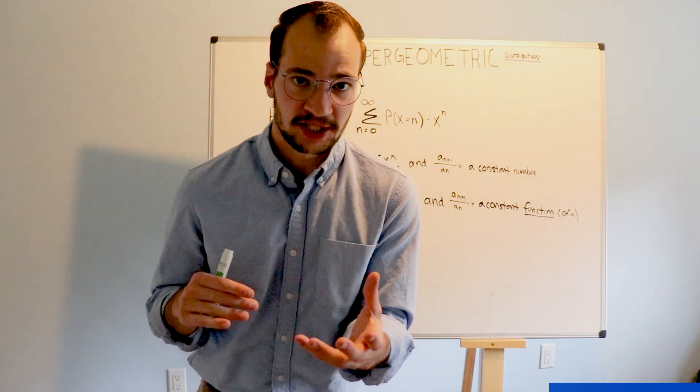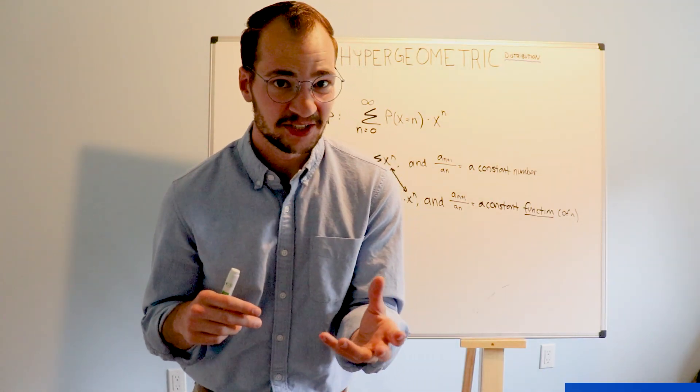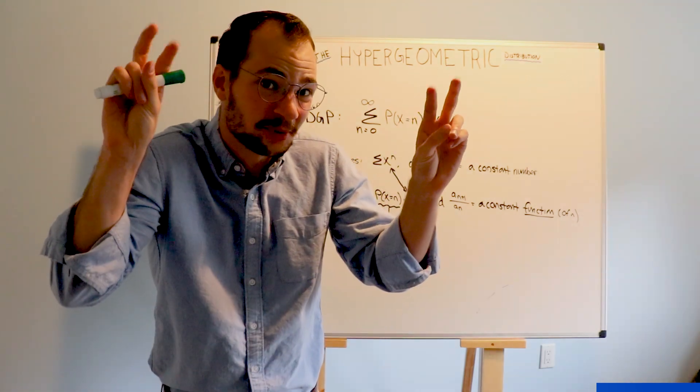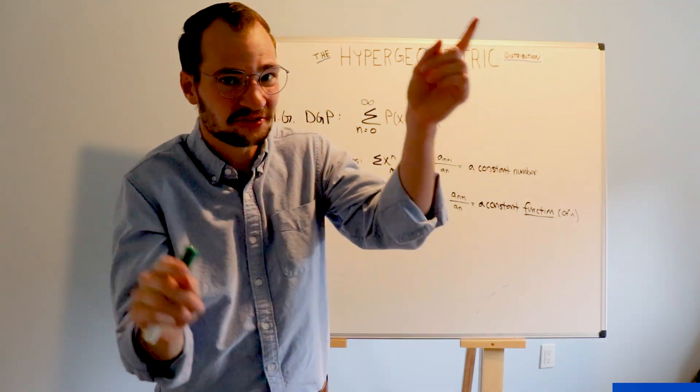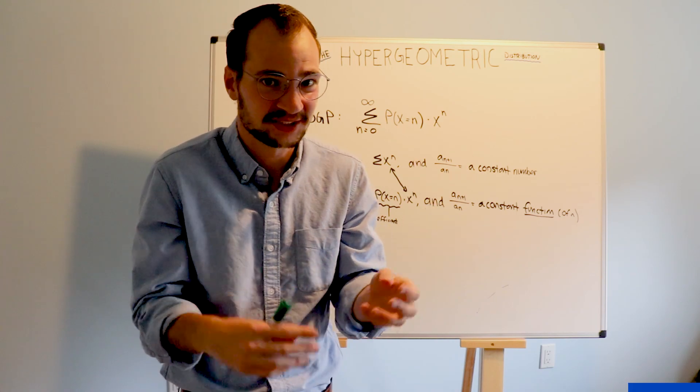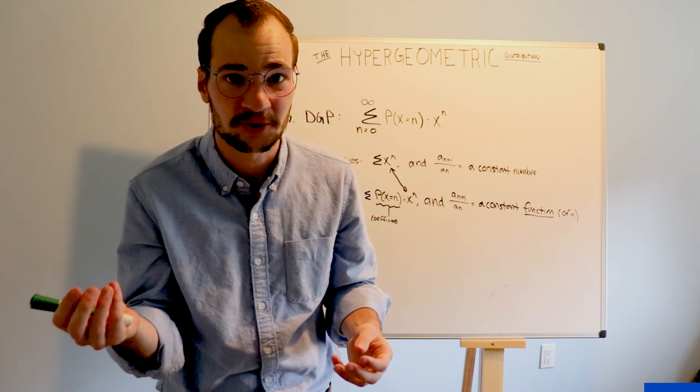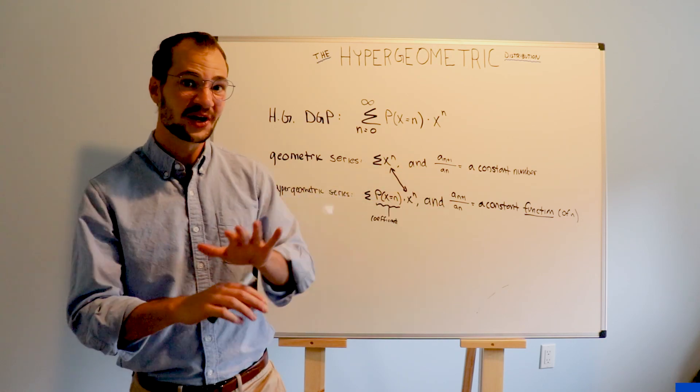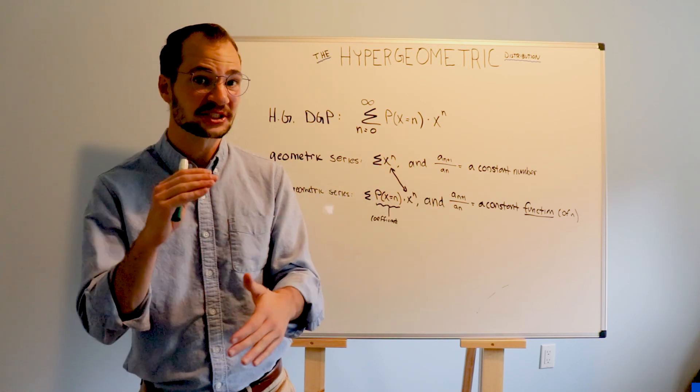So the distribution, hypergeometric, really doesn't have anything to do with the geometric distribution. Really, it's like a hyper binomial, or really a different case where instead of replacing them, we just keep them out of the pool. So hypergeometric comes from this property, not anything to do with the geometric distribution.